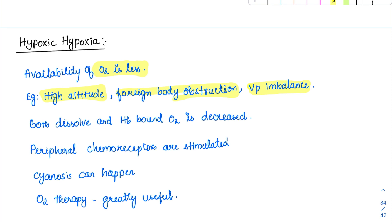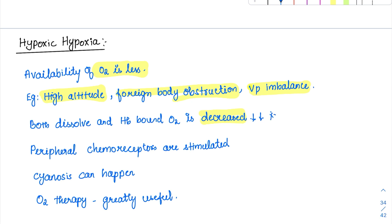In hypoxic hypoxia, both dissolved oxygen and hemoglobin-bound oxygen are decreased. When the dissolved form decreases, the peripheral chemoreceptors are stimulated. Cyanosis can happen because deoxy hemoglobin levels can go beyond 5 g/dL — just as when travelling to Ladakh or high mountains, we develop cyanosis in the hands, toes, and face. Oxygen therapy is very helpful here; that's why climbers in the Himalayas use oxygen cylinders beyond a certain altitude.